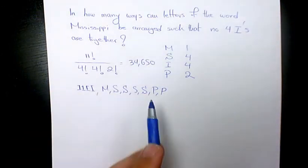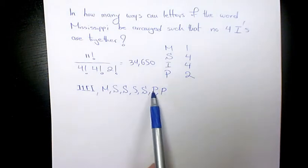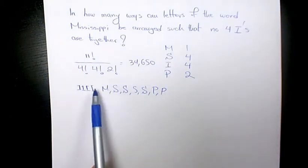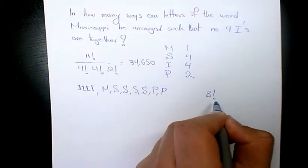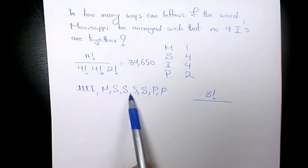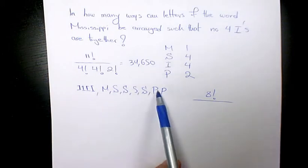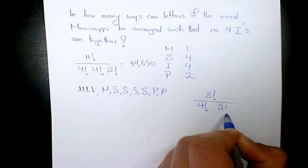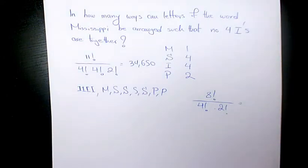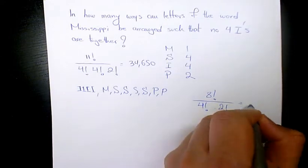So it looks like we are talking about a word with 1, 2, 3, 4, 5, 6, 7, 8 letters. So I'm going to have 8 factorial divided by S is repeating four times and P is repeating twice, divided by 4 factorial and 2 factorial. And when you calculate it, it's going to be 840.